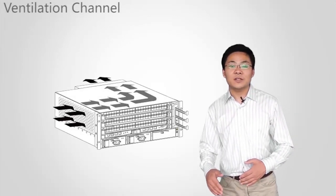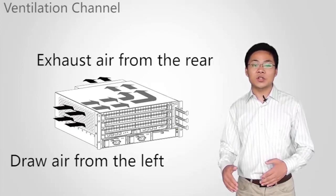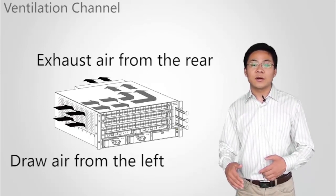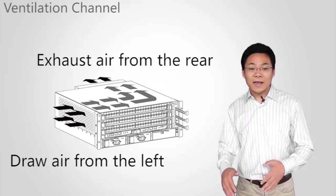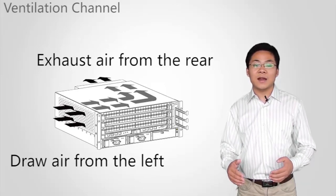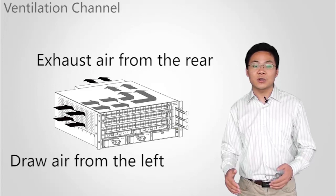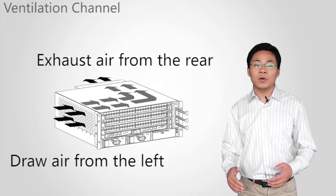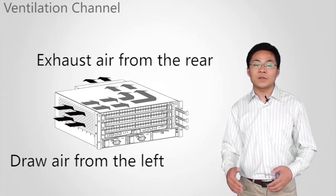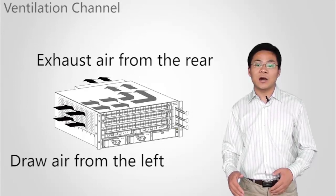The air intake vent is on the left side of the switch and the air exhaust vent is at the rear. The left side of the switch should never face the air exhaust vent of another switch. Cables should not be deployed on the left or at the rear of a switch to avoid the possibility of blocking vents.